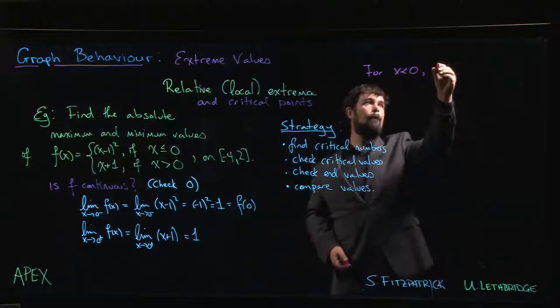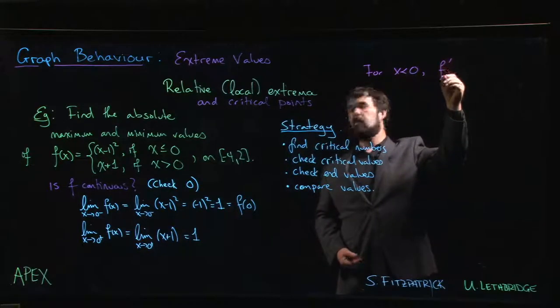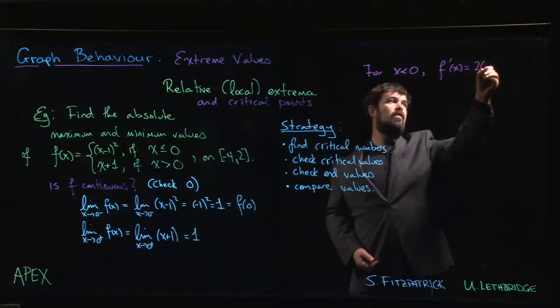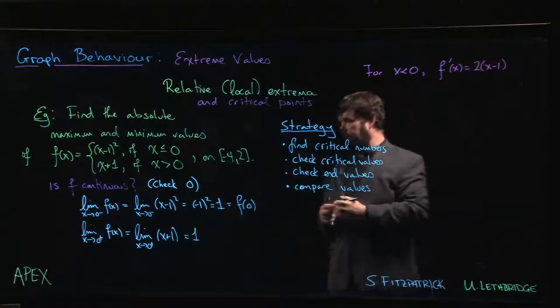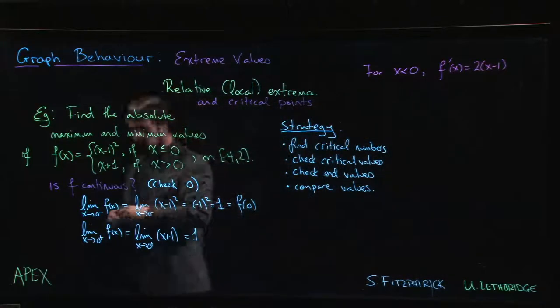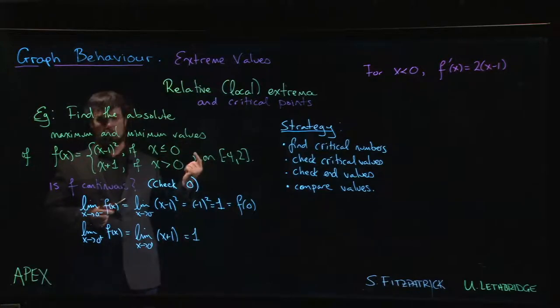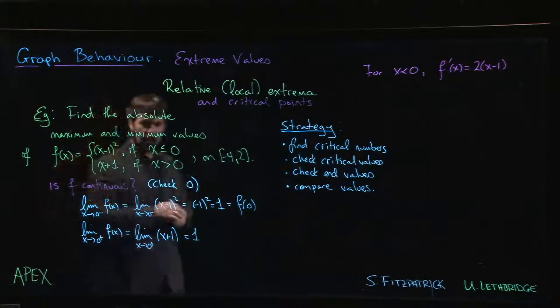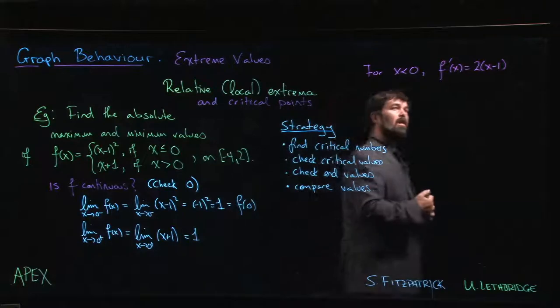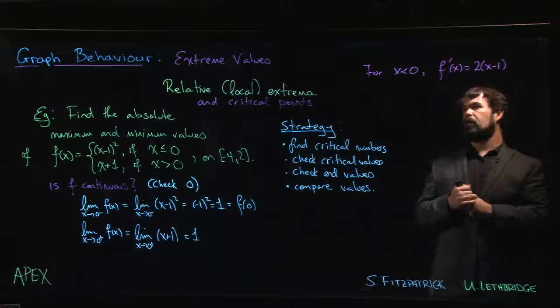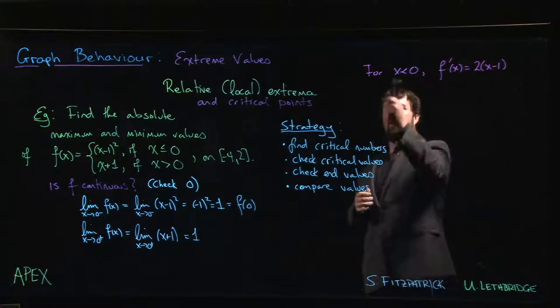Okay, so there's a point where f prime is 0, but f prime is going to be equal to 0 when X is equal to 1, and we're not using this when X is equal to 1. So we ignore the fact that f prime of 1 is equal to 0 because we're only looking at X less than 0.